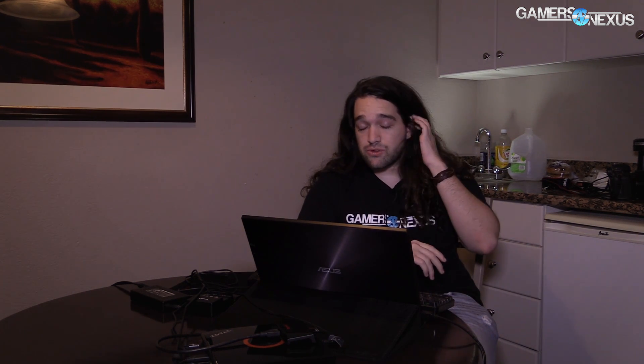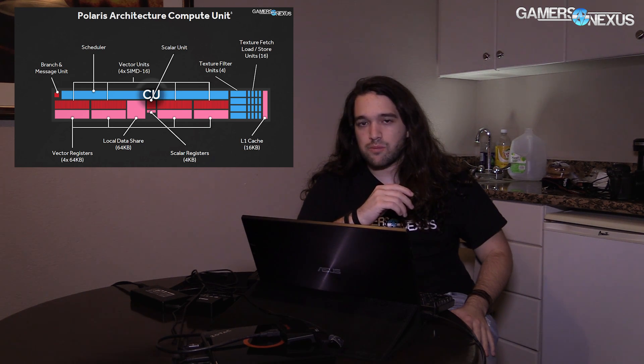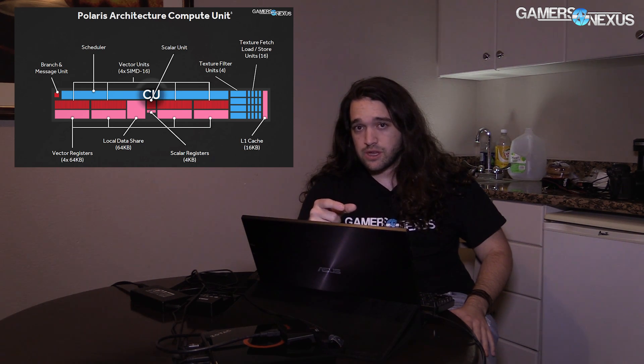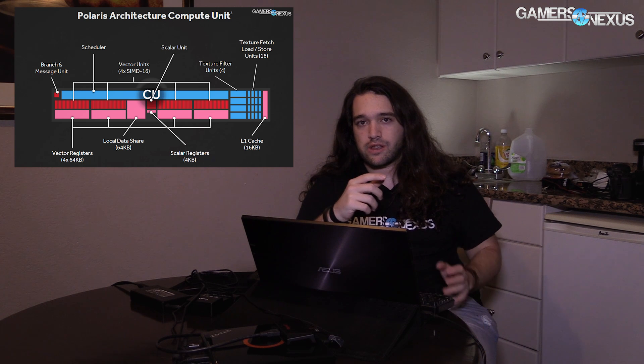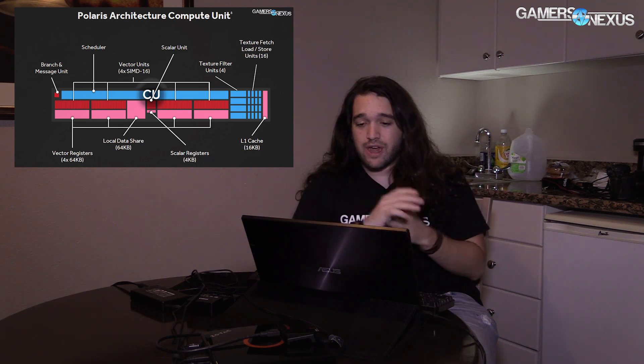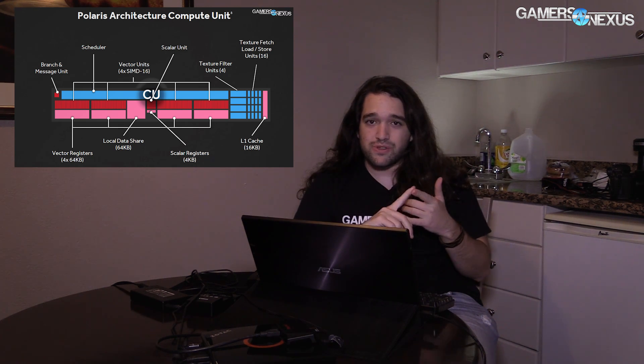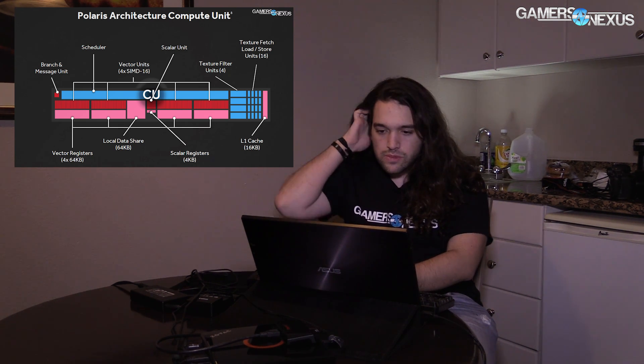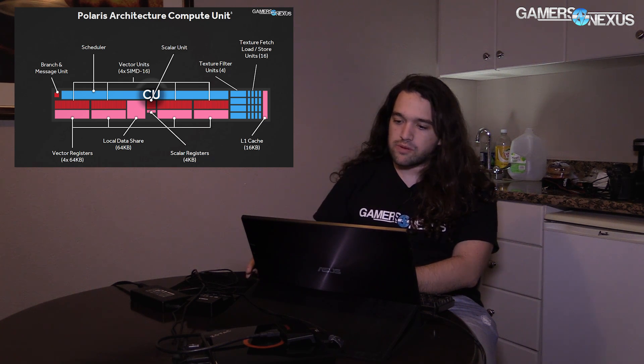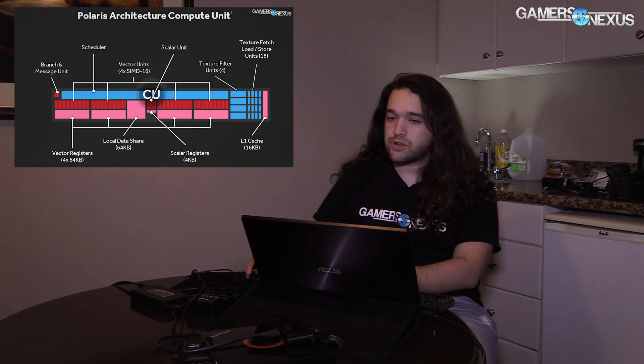One key thing to note right out of the gate is that the traditional compute units more or less still exist. The compute unit, from what I've been told, looks pretty much the same as today's NCUs. That's what Vega uses — it runs on NCUs. That's not a fully defined public acronym yet, but it's something like New Compute Unit or Next-Gen Compute Unit. NCUs are what we'll be referencing when talking about the traditional CUs.